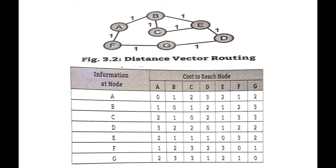In this routing table, if the source node has to go to a destination, it finds the shortest path. If the destination is a direct neighbor, the cost is known directly. If not a neighbor, we find the minimum distance path through intermediate routers. For example, if G is the source and B is the destination, possible paths include G→F→A→B (cost 1+1+1=3), G→D→E→B, or G→D→E→C→B. The shortest path is the one with minimum cost — the minimum vector. This is the distance vector routing algorithm.